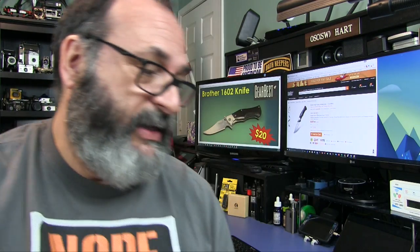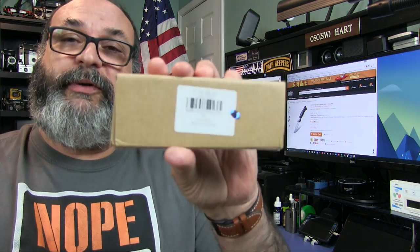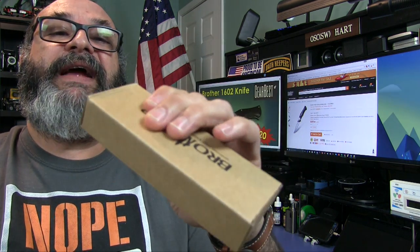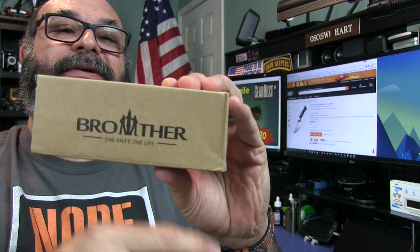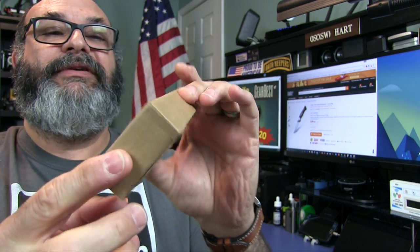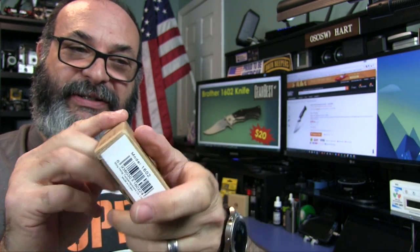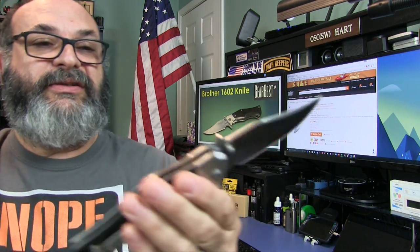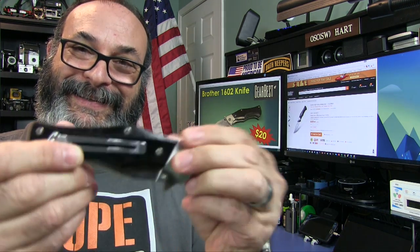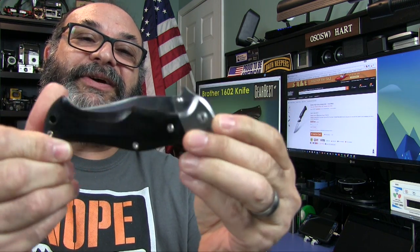So there it is, the Brother 1602. Very impressive knife for the price under $20. By the way, if you do order this, it comes in a cardboard box. Nothing fancy. There's the Brother logo. Very nice knife. Definitely worth $20. If you're looking for something that has balls as a male, it's a large knife, EDC liner lock with some wood, this is definitely your knife.